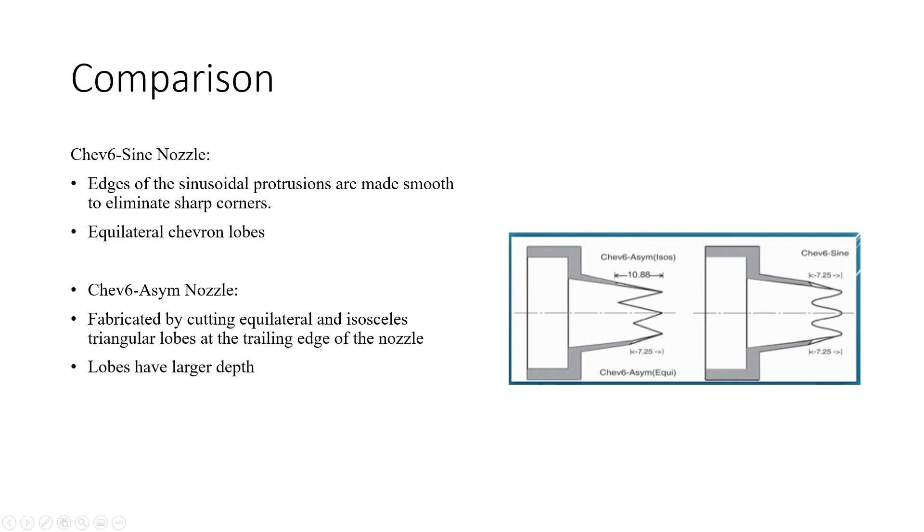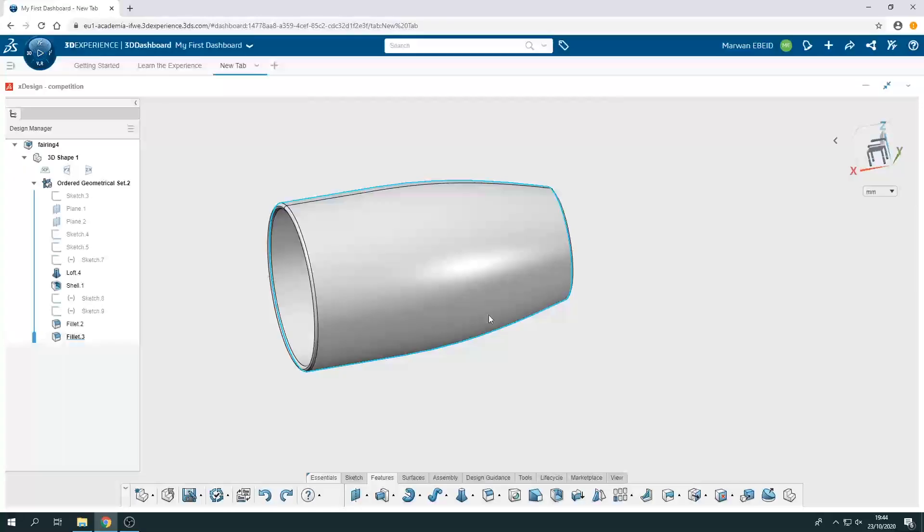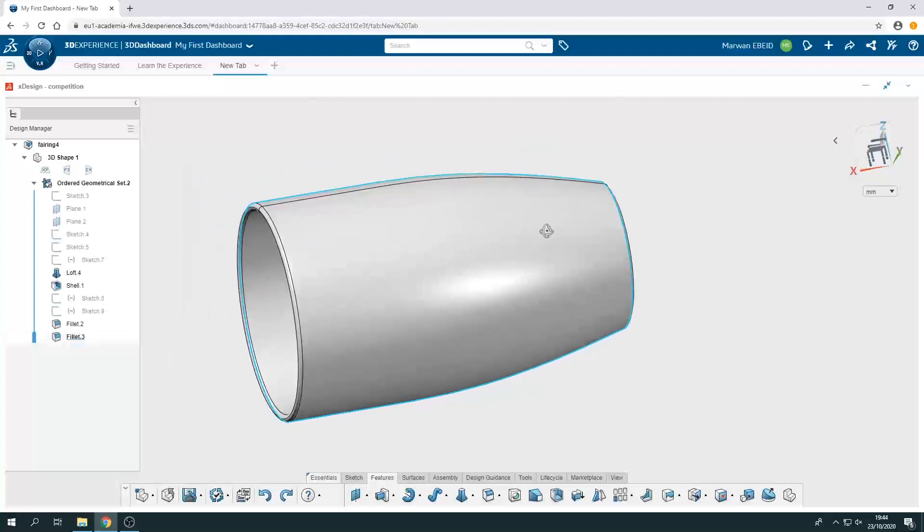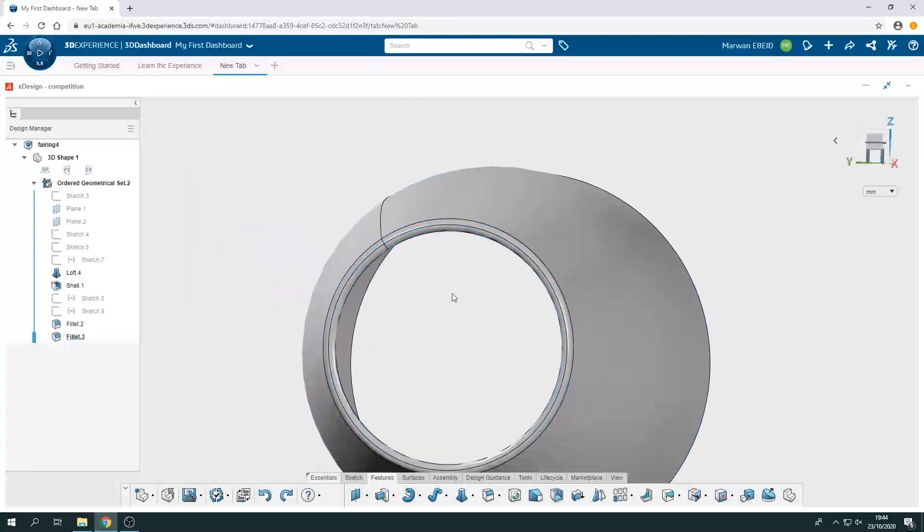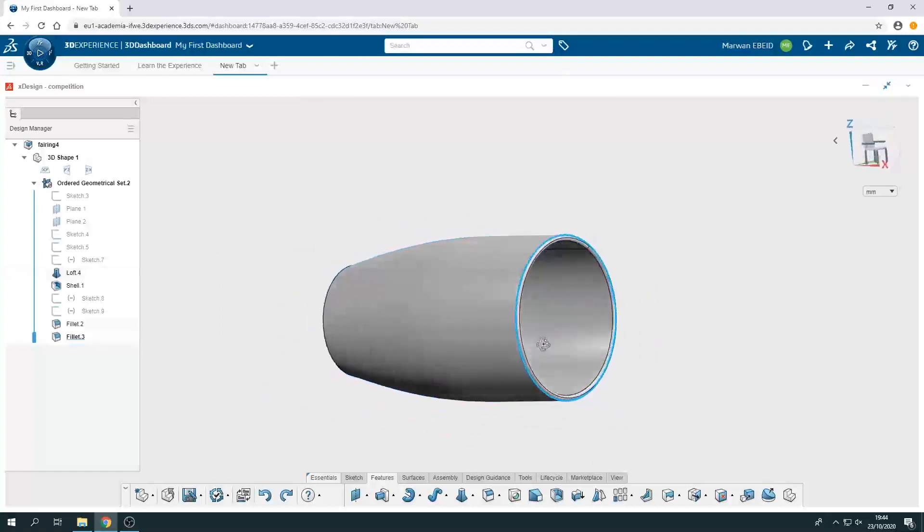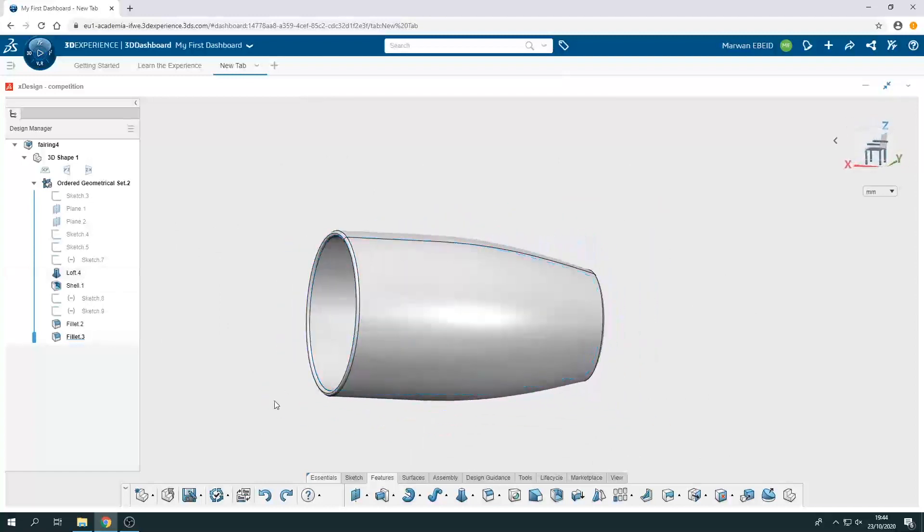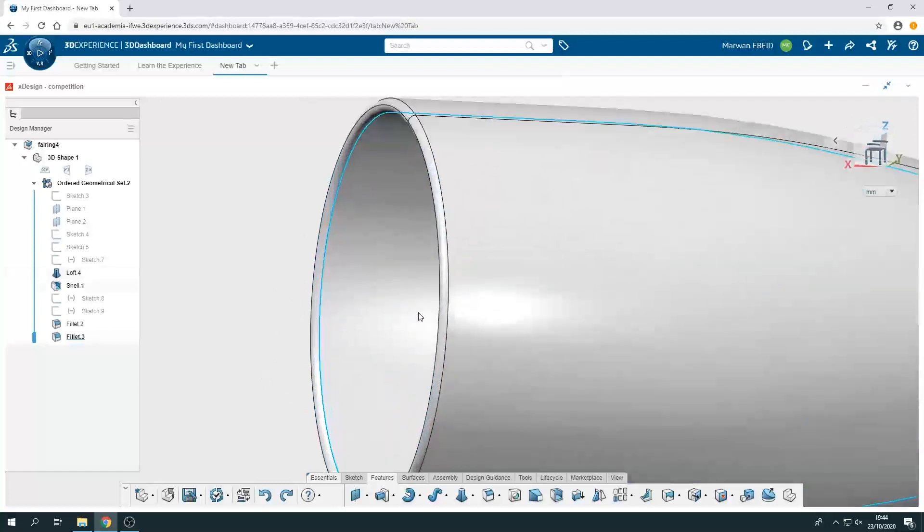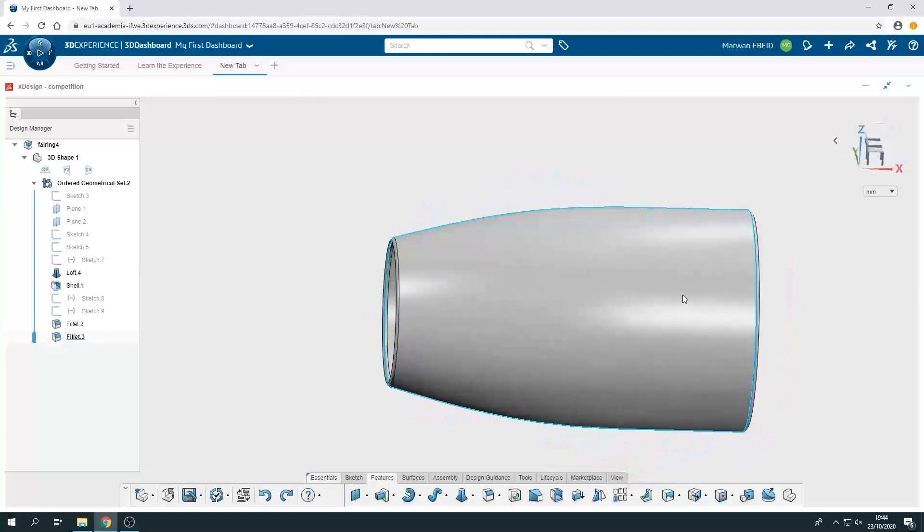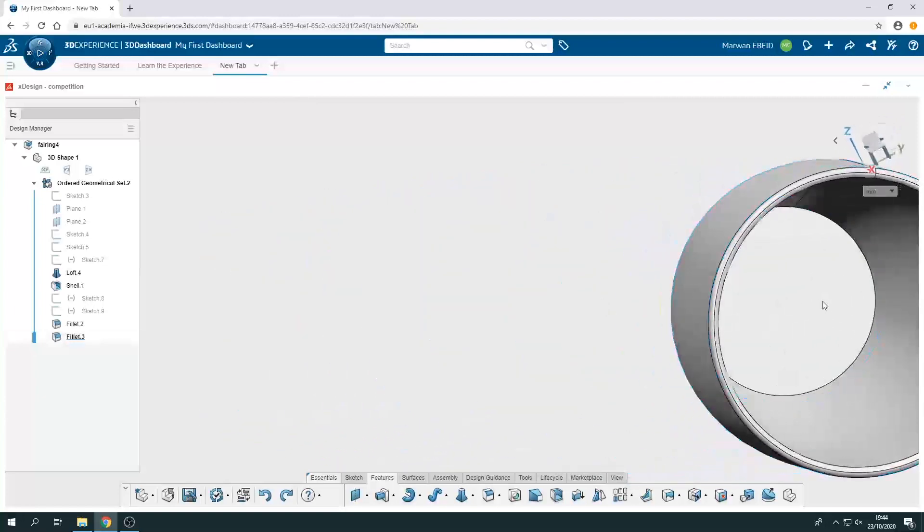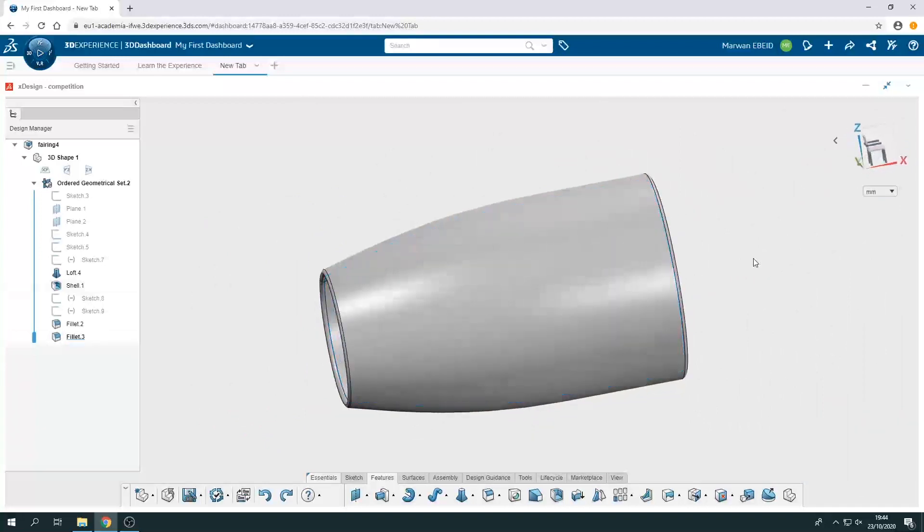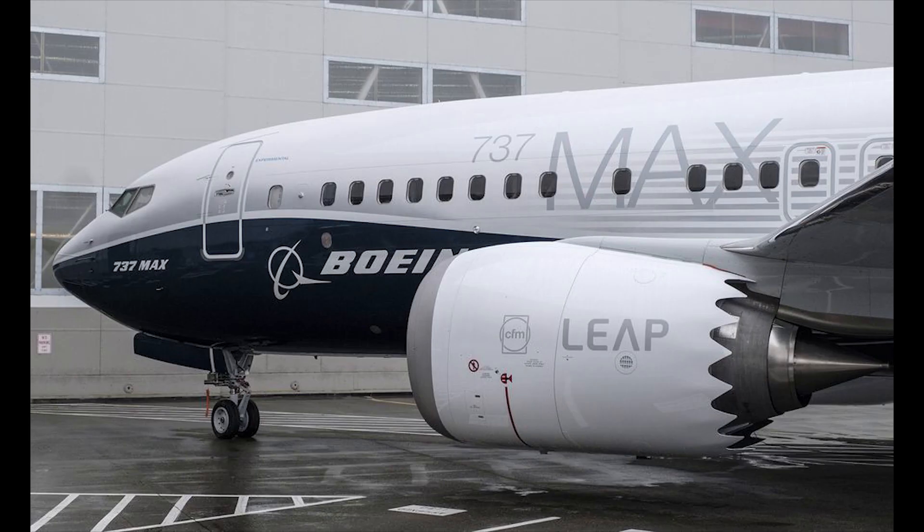The first nozzle we are going to talk about is the baseline nozzle. It can also be referred to as plane nozzle. This nozzle was used in the earlier turbofan engines. It produces high velocity and high thrust at the same time and produces higher acoustic power level due to high turbulence at the exit of the nozzle.